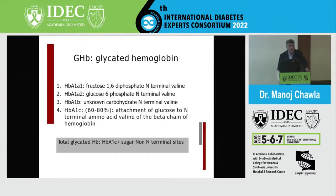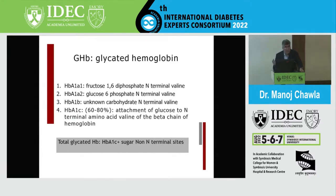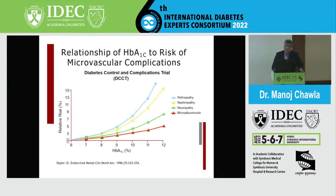The older term 'glycated hemoglobin' is still measured in some laboratories. In glycated hemoglobin, other sugars are also included — HbA1C, which is glucose-specific, makes up about 60 to 80% of the glycated hemoglobin component. The rest includes sugars attached to non-N-terminal sites like fructose-1,6-diphosphate and glucose-6-phosphate. In the past, the normal range for glycated hemoglobin was 6–8%, with above 8% considered abnormal. Today, the normal HbA1C range is less than 5.7%, 5.7–6.4% for prediabetes, and 6.5% or above for diabetes.